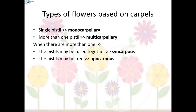Types of flowers based on carpels: a gynoecium may contain a single carpel, many separate carpels, or many carpels that have fused together. The gynoecium may consist of a single pistil, called monocarpellary, or may have more than one pistil, called multicarpellary. A monocarpous gynoecium has only one carpel — one stigma, one style, and one ovary. For example, flowers that produce peach fruits are monocarpous in nature; the single ovule becomes the seed or pit of a peach, and the single ovary becomes the juicy fruit.